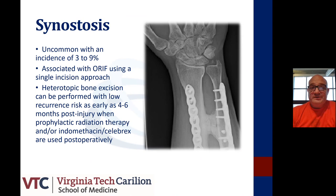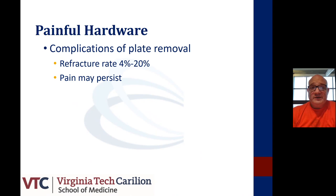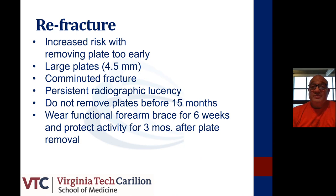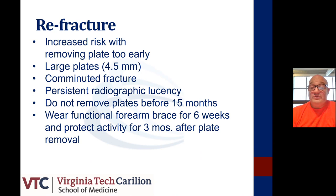Synostosis is uncommon, seen between 3 and 9%, and mainly associated with a single incision approach. When present, we tend to remove synostosis early between 4 and 6 months, using prophylactic radiation therapy and indomethacin in the postoperative period. Regarding hardware removal: the refracture rate is between 4 and 20%. Pain may persist, specifically with plates removed too early, large plates like a 4.5 millimeter plate, severely comminuted fractures with long plates, or persistent radiographic lucency. We don't recommend removing plates before 15 months. After removal, a forearm functional brace for the first 6 weeks and protection from contact activities for the first 3 months is highly recommended.